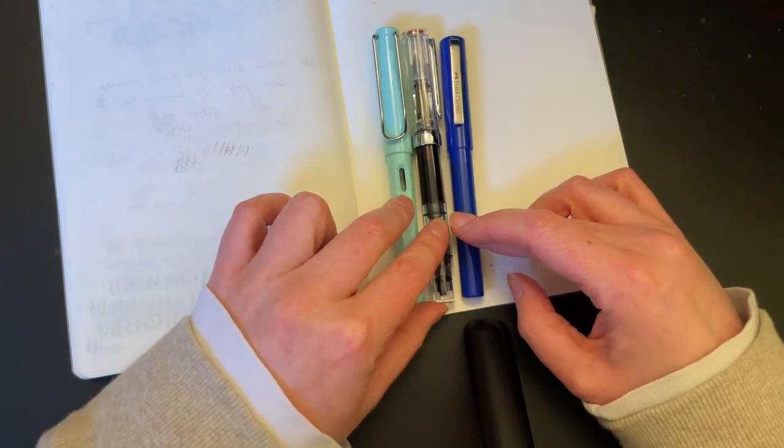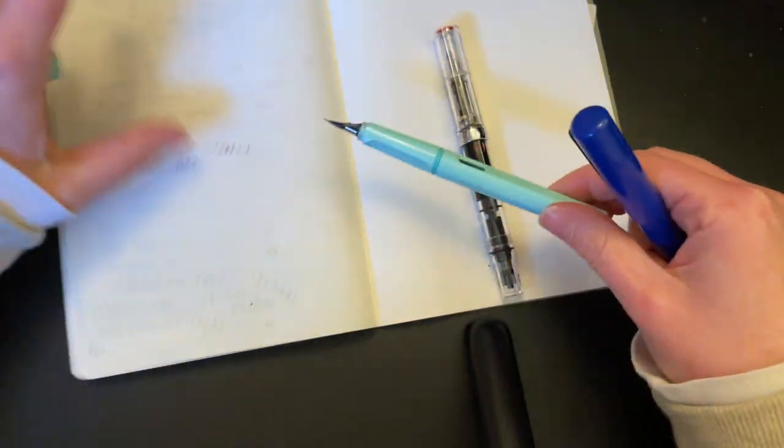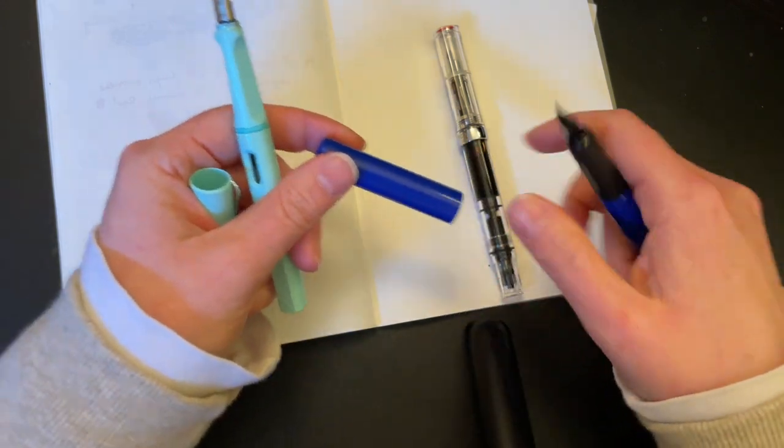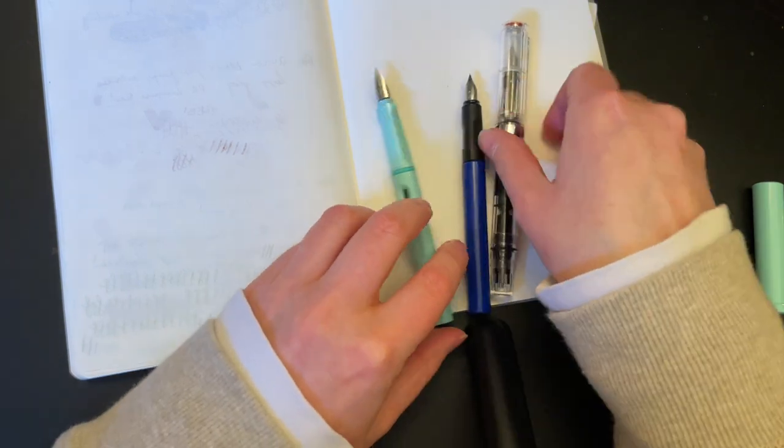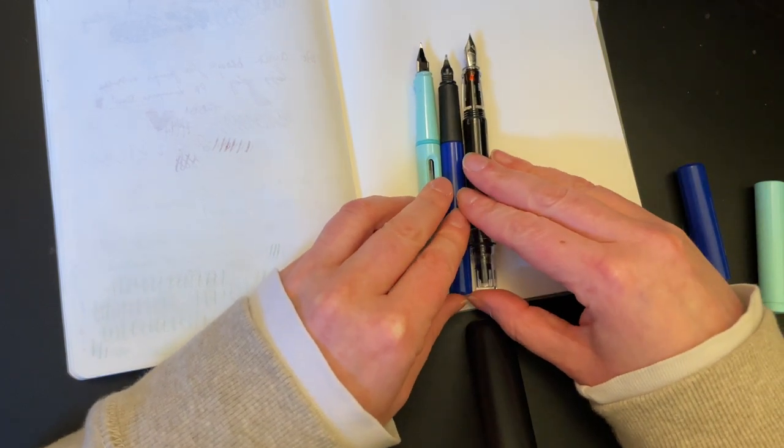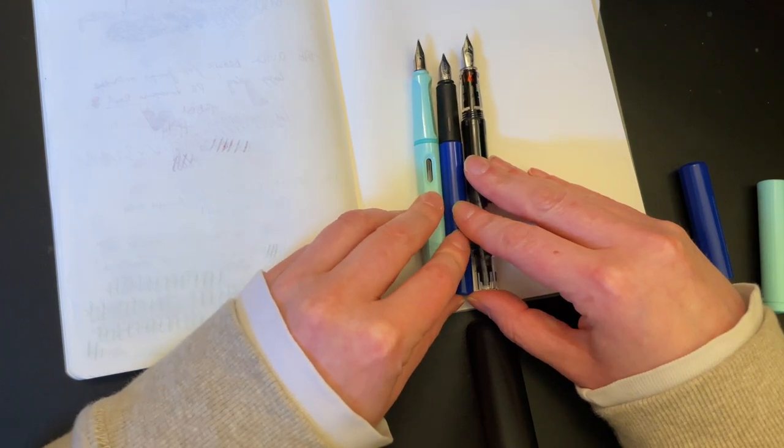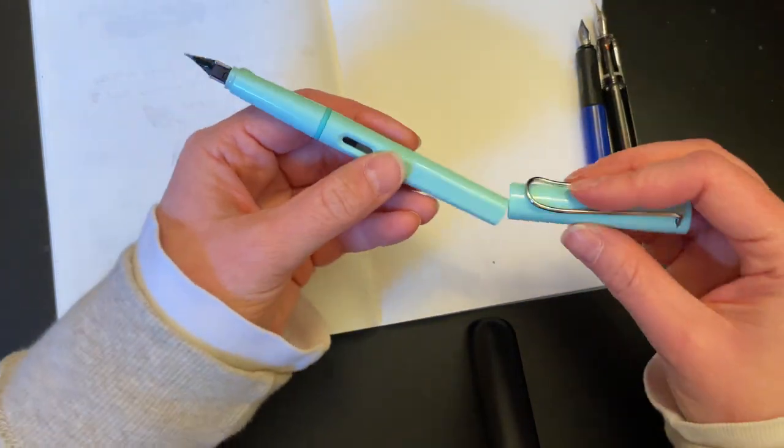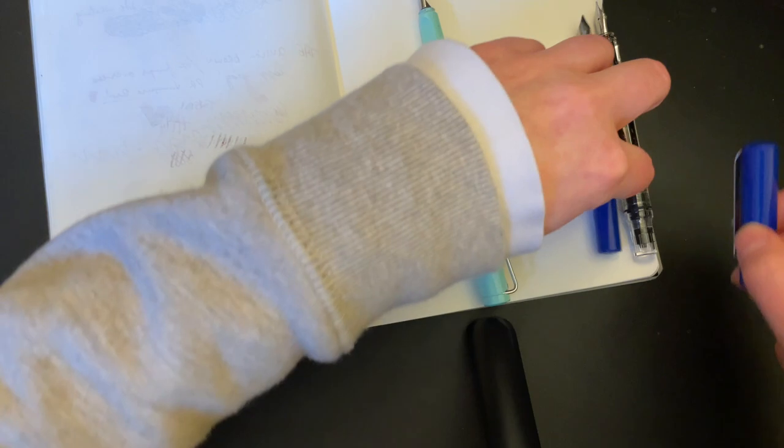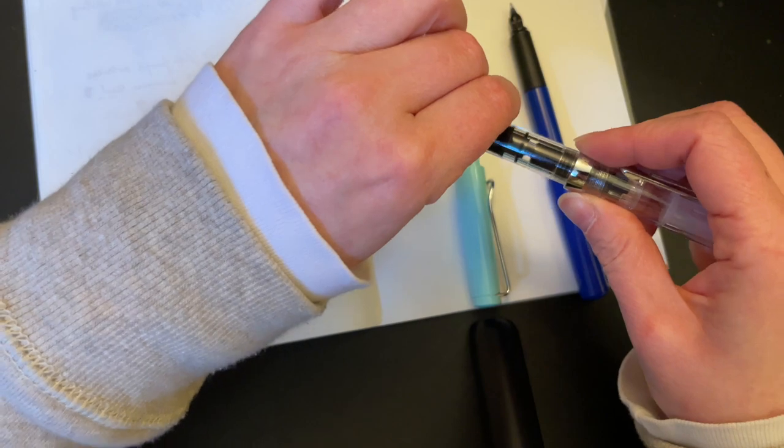The Lamy Safari and the Faber-Castell Student are snap caps. All of them post. Without posting, the Eco-T is the longest, followed by the Safari, and then the Faber-Castell Student.